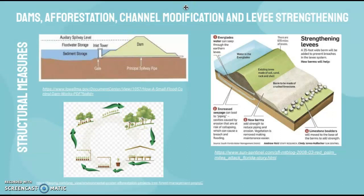There's also channel modification, which involves maybe straightening the channel or creating a diversion spillway. A diversion spillway is basically another path for the water to flow. Straightening makes the river more straight so the water can flow more rapidly and with more ease.